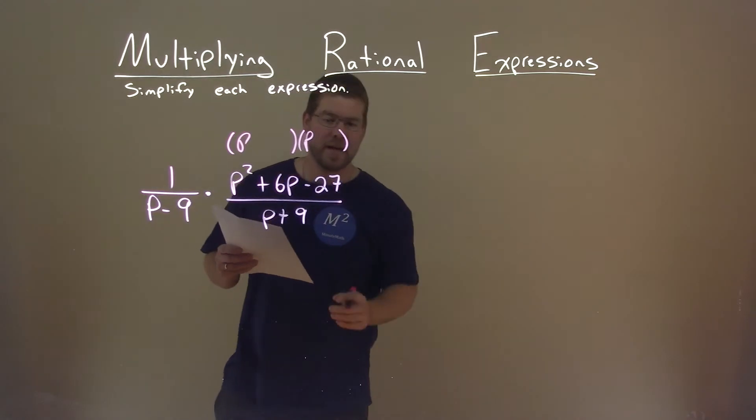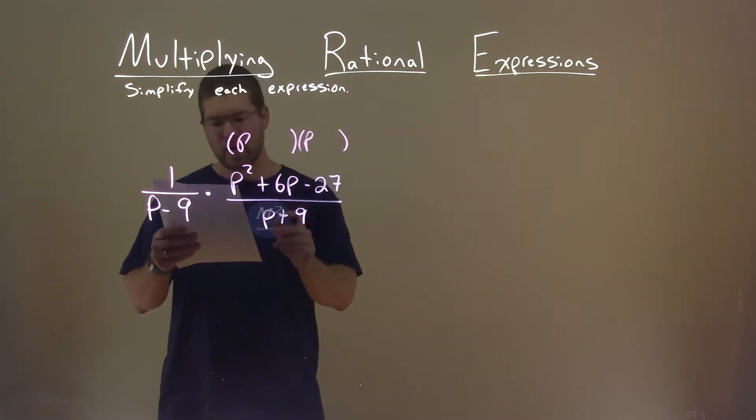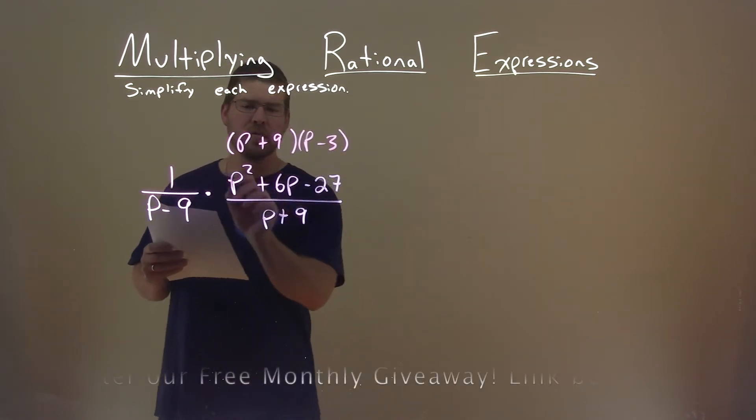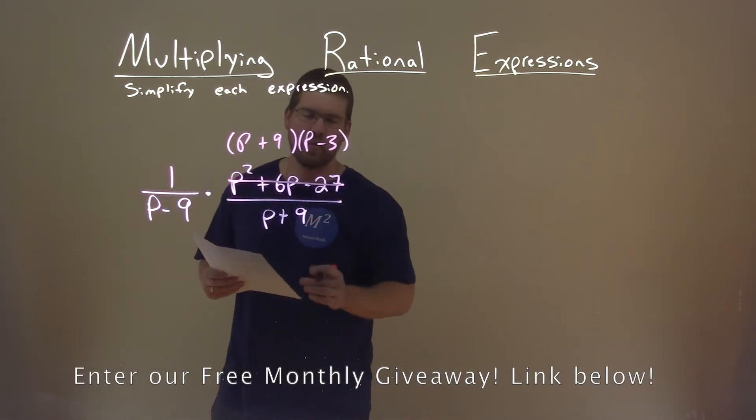What two numbers multiply to be negative 27 but add to be a positive 6? That's a positive 9 and a negative 3 here. So now we replace this with our factored form.